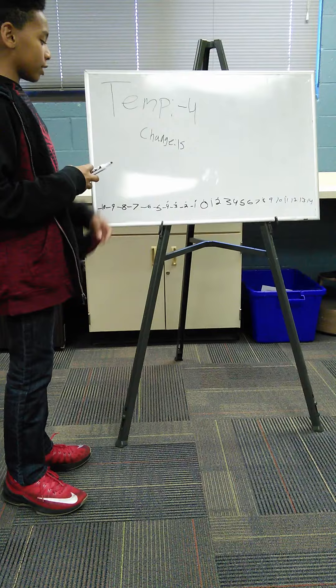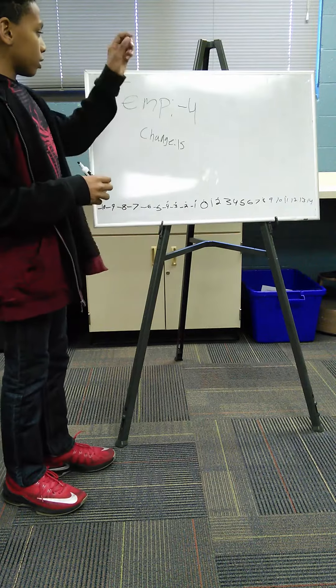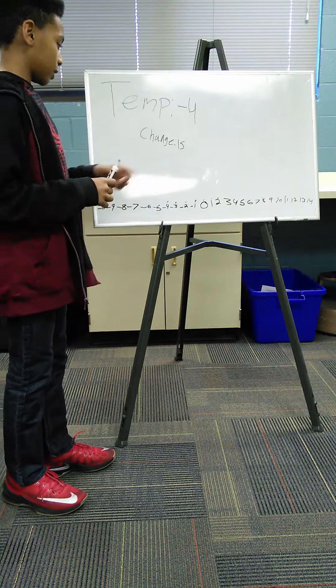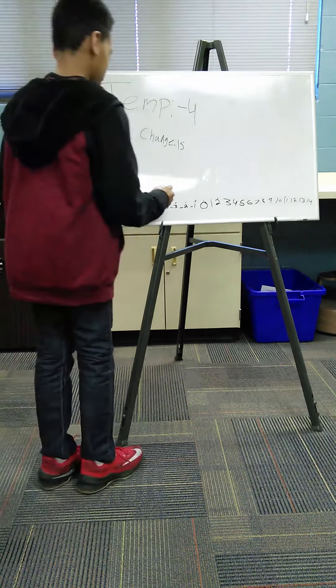And so now basically to find the change, we're going to have to do negative 4 plus 15, and we can show that on our number line. Here's negative 4,